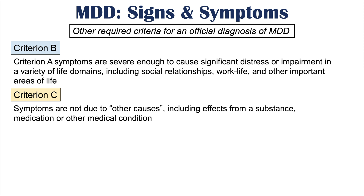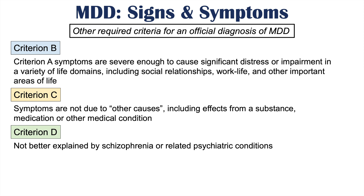Criterion C is essentially an exclusion criterion: the symptoms must not be due to other causes, including the effects of a substance, medication, or other medical condition. If a medication or physical condition is causing all the symptoms, it would not be classified as major depressive disorder. Criterion D states that the signs and symptoms are not better explained by schizophrenia or related psychiatric conditions like schizophreniform or schizoaffective disorder.